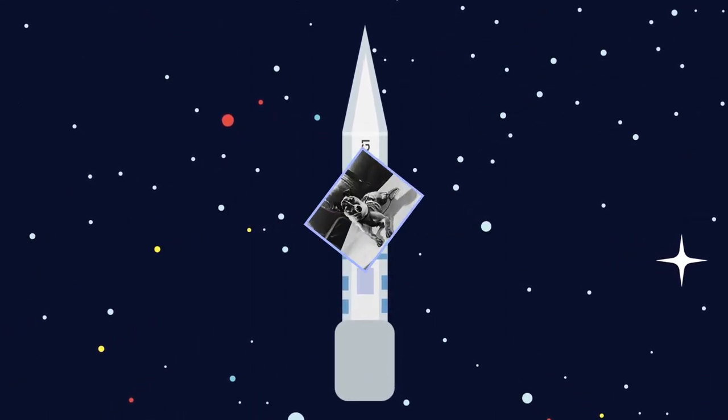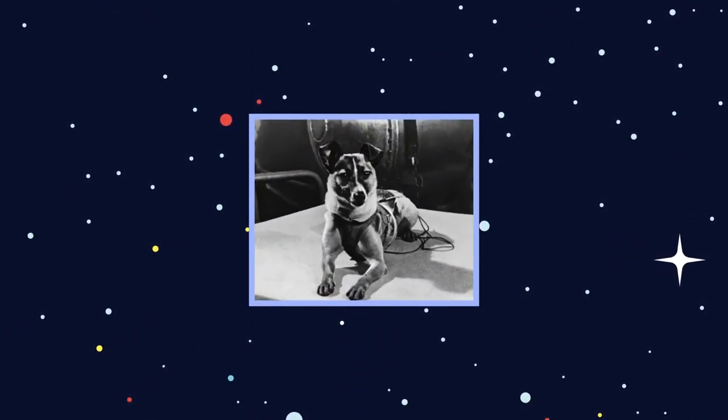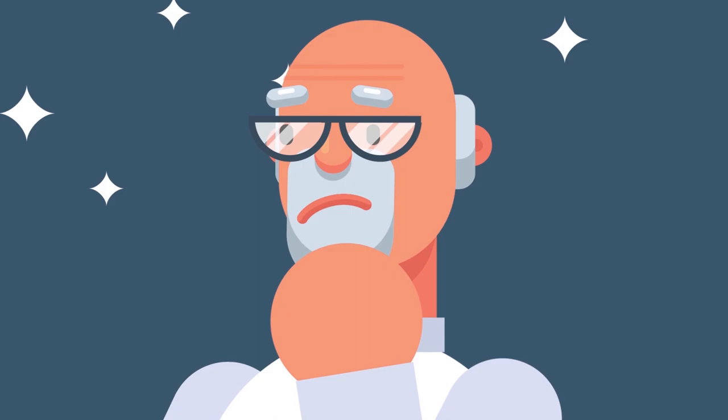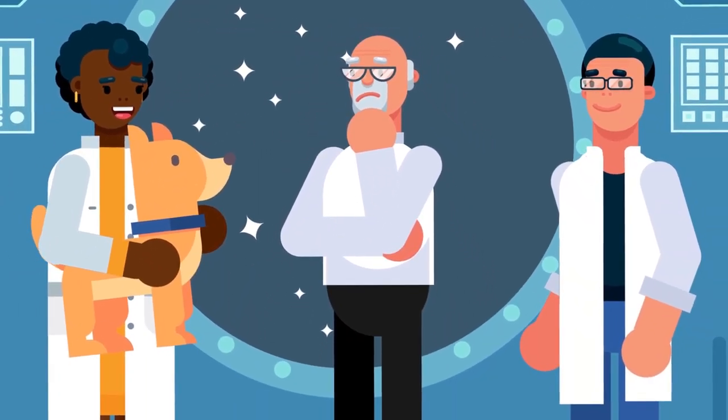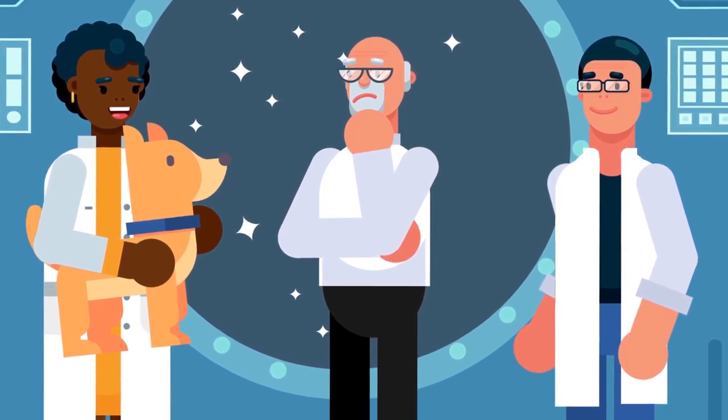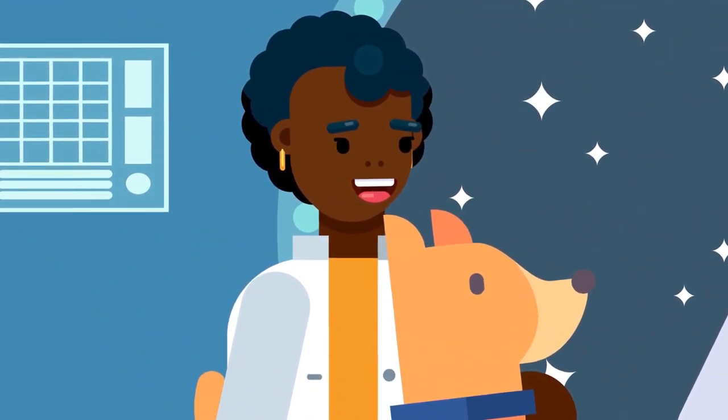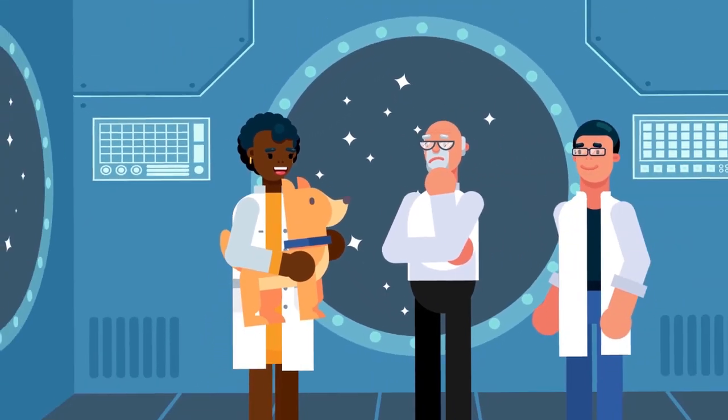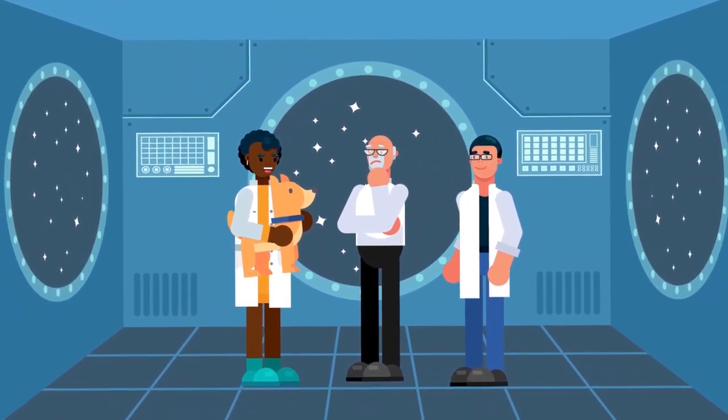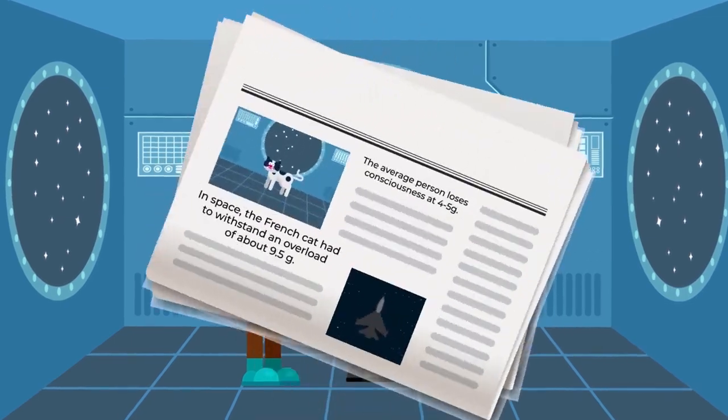The same Soviet Laika was launched into orbit around the Earth. But the cat would definitely not want to trade places with this competitor. Nobody intended to bring that dog back at all. This was not provided for in the design of the spacecraft. Scientists expected that the animal would live in orbit for about a week, providing them with the necessary data. But Laika died just 7 hours after the launch. The story of animals in space is not always a fun one.